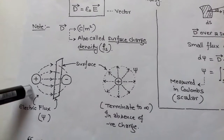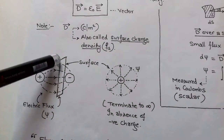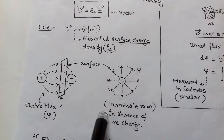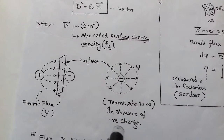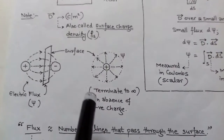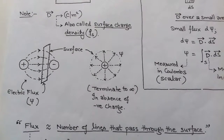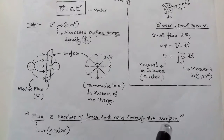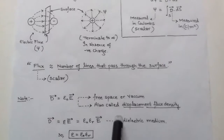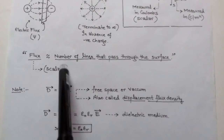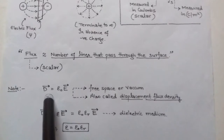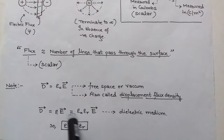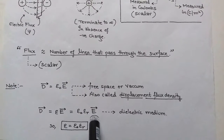We can say that flux is the number of lines that pass through the surface. Electric flux density vector D equals ε₀E, where ε₀E means we take electric field in free space or vacuum. It is also called displacement flux density. In case of a dielectric medium, electric flux density D equals εE, where ε = ε₀εᵣ.